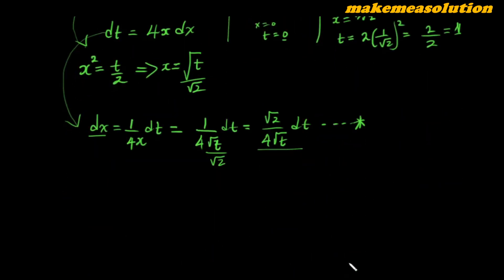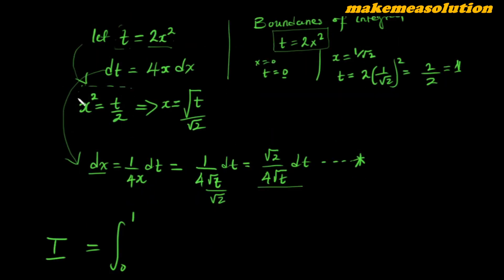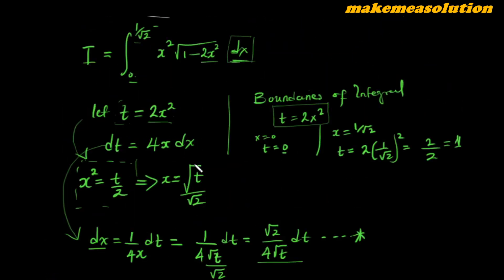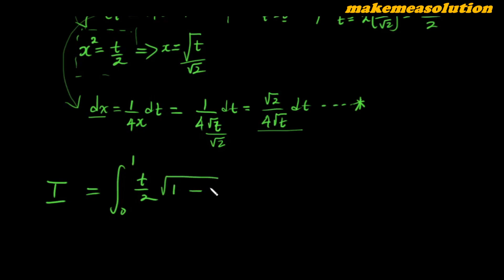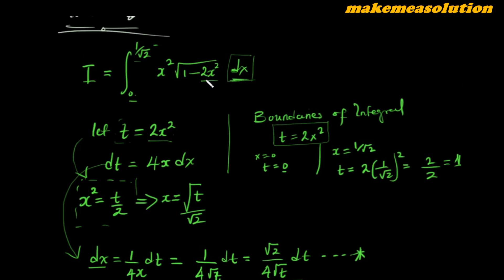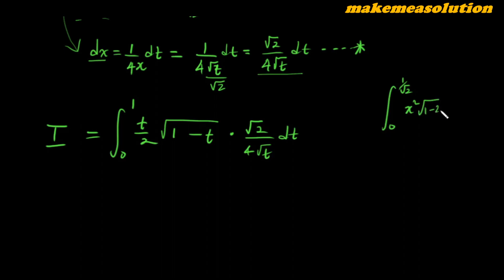Taking note of all these changes, the integral becomes: I equals the integral from 0 to 1 (since we're transforming to the t domain). x squared becomes t over 2. The square root of (1 minus 2x squared) becomes the square root of (1 minus t). And dx becomes root 2 over (4 root t) dt. So the original integral has now been transformed to this equivalent form in t.